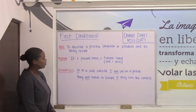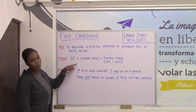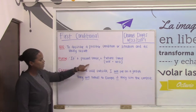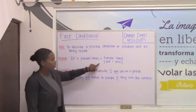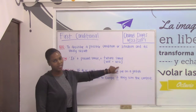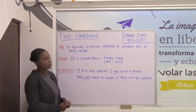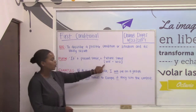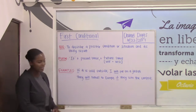So we follow the form: if plus the present tense, then a comma plus the future tense. And within the future tense, we use the word 'will.'